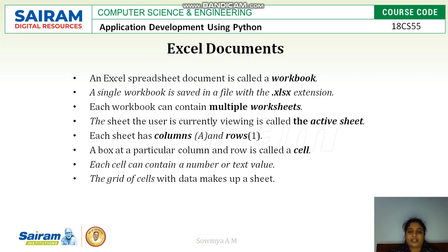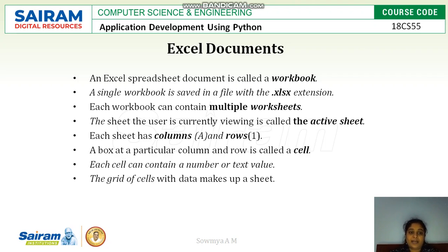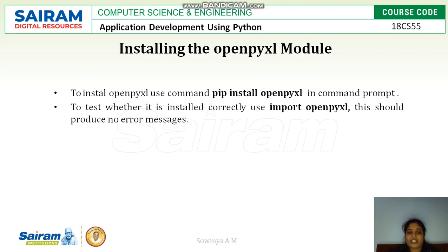The sheet which is currently viewed is called the active sheet. A sheet has columns with names A, B, C, D and rows with names 1, 2, 3, 4 and so on. Each box like A1, A2, B3, or B5 is called a cell, and each cell contains a number or text value. The grid of cells with data makes up a sheet.